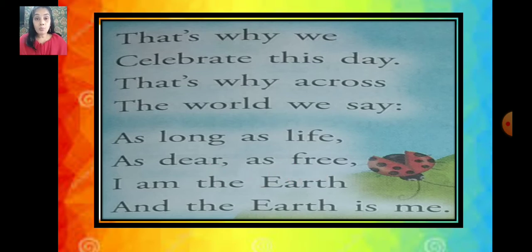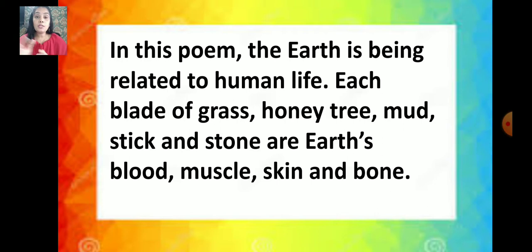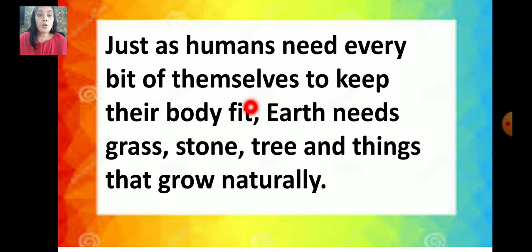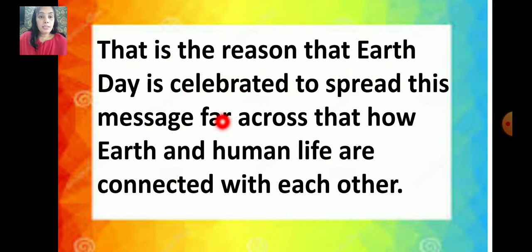It's a very sweet small poem — you can easily learn it by heart. This poem explains about the earth related to human life. Each blade of grass, honey tree, mud, stick and stone are earth's blood, muscle, skin and bone. If you are thorough with what the poem is about, you can easily answer any type of questions. Just as humans need every bit of themselves to keep their body safe, earth needs grass, stone, tree and things that grow naturally.